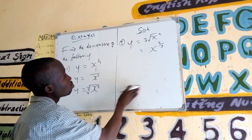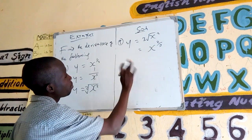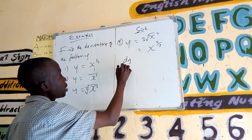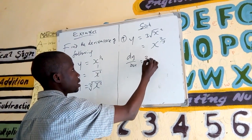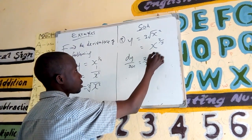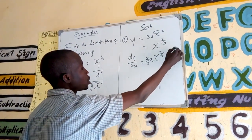We will find dy by dx. dy by dx is equal to this one. We will have 2 over 3 times x to the power of 2 over 3 minus 1.